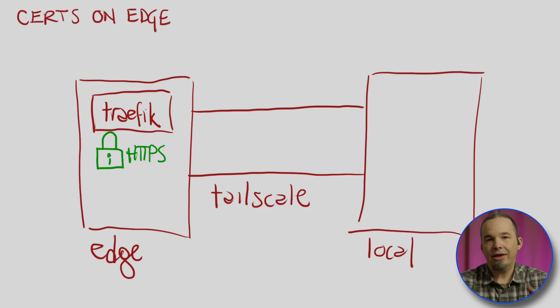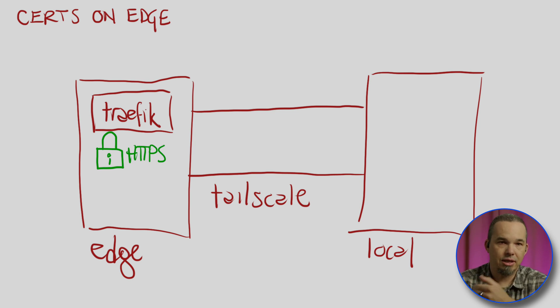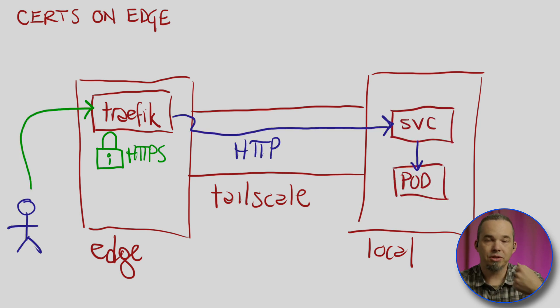Whatever you deploy, you probably want to secure with TLS. So how does that fit into this scenario? You have two places that can hold certificates: the local cluster and the edge cluster. If you put the certificate on the edge cluster, it can decrypt the traffic and then send it over the Tailscale network to port 80 on the local cluster. This is analogous to TLS offloading at the edge in a single cluster, with unencrypted communication inside Kubernetes and inter-node communication encrypted by the CNI. Since Tailscale is encrypting the traffic between the two clusters, that's a totally fine option.